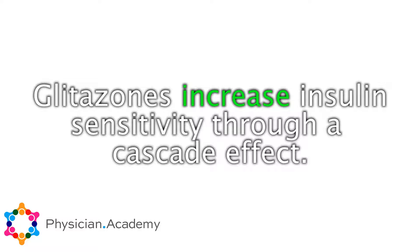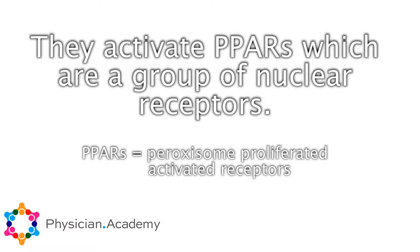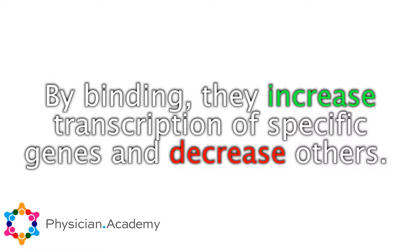There are a lot of steps that are affected by this medication. They work by activating PPARs, which is the peroxisome proliferator-activated receptors, which is a group of nuclear receptors. By activating these receptors, they affect the transcription of a number of specific genes, decreasing the transcription of others. This then leads to an effect on cellular metabolism.